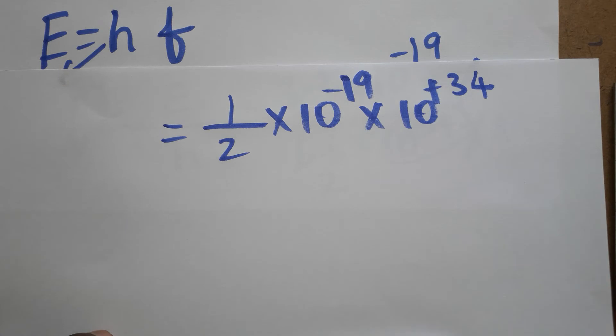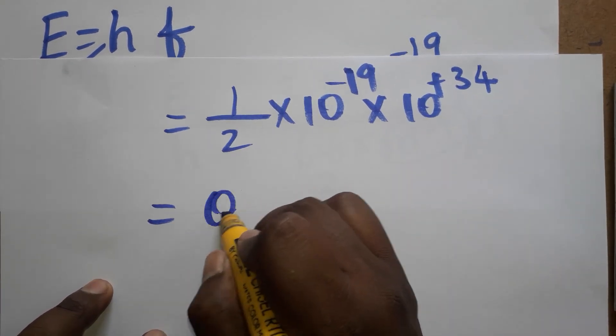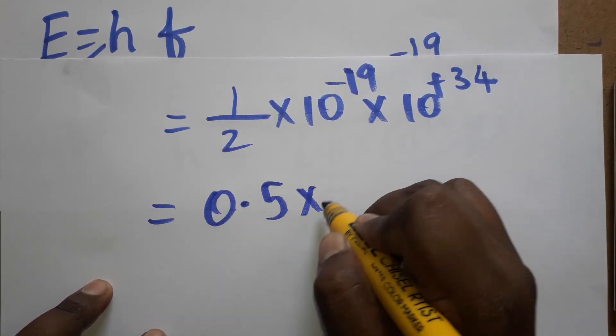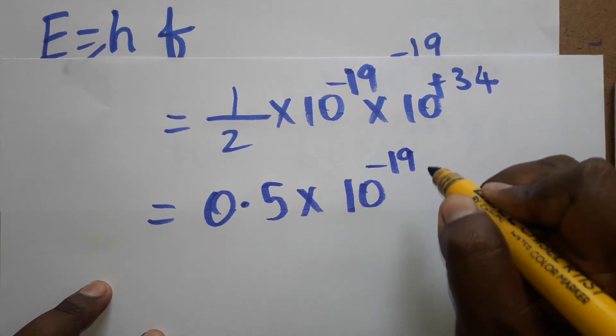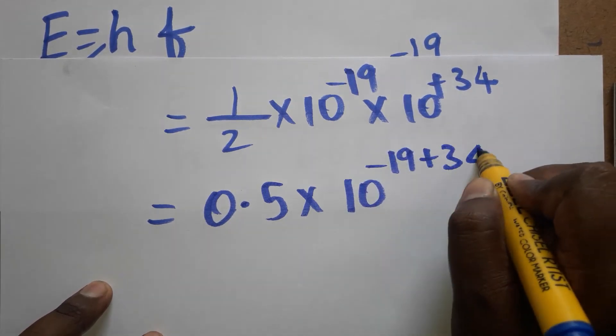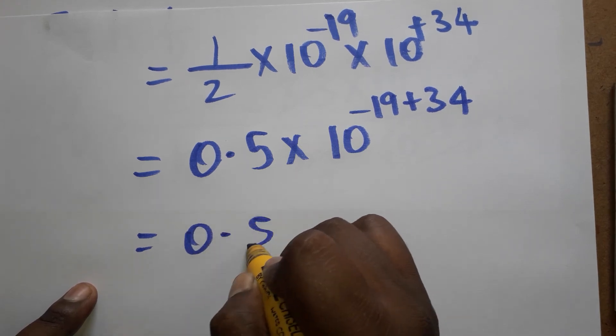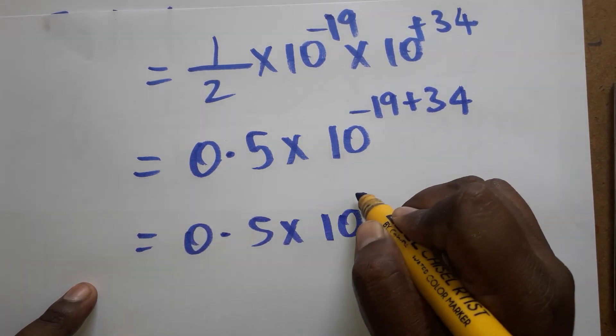1 divided by 2, that's exactly half, you can write as 0.5 × 10^(-19 + 34). This solution will get as 0.5 × 10^+15.